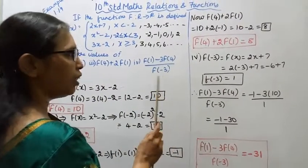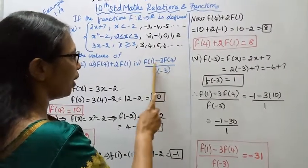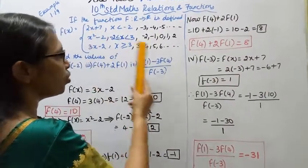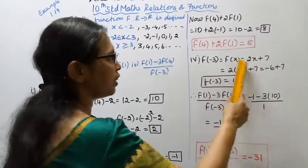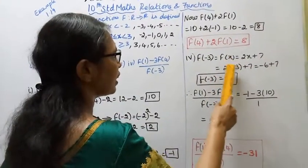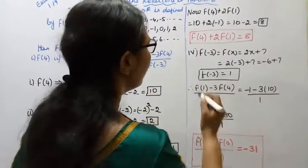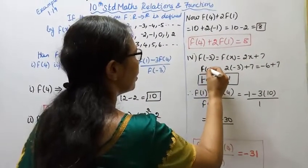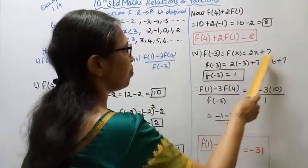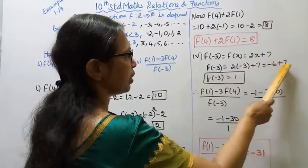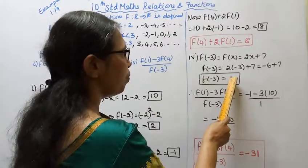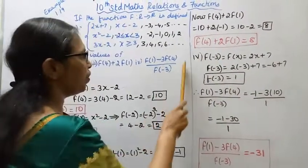Now find f(minus 3). For minus 3, f(x) equals 2x plus 7. So f(minus 3) equals 2 into minus 3 plus 7, which equals minus 6 plus 7 equals 1. So f(minus 3) equals 1.